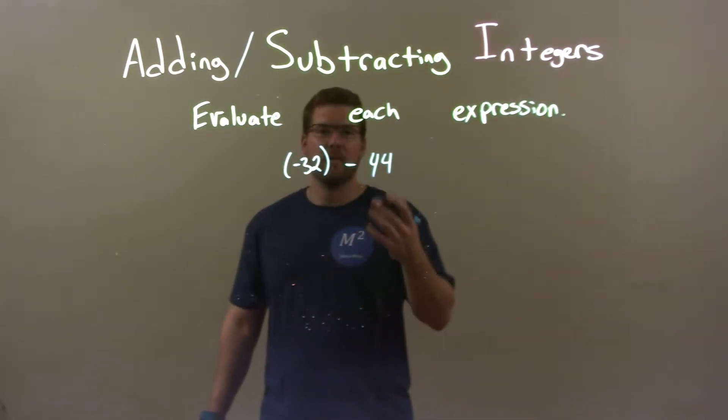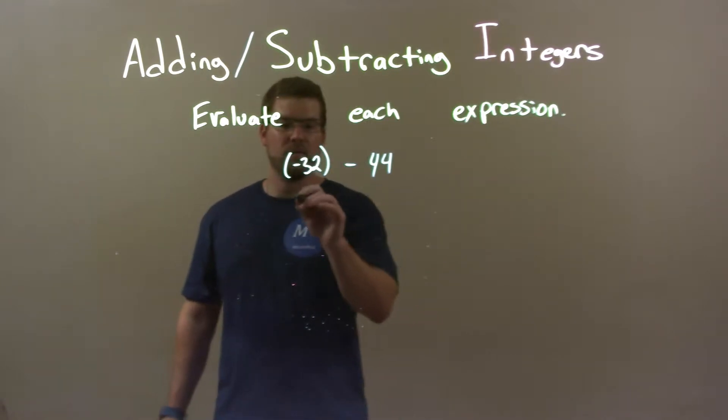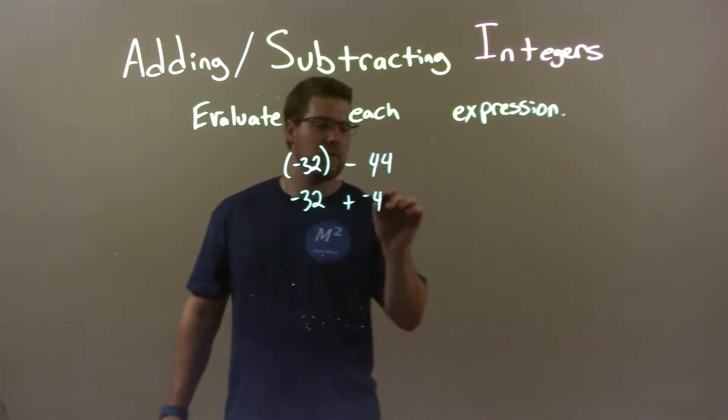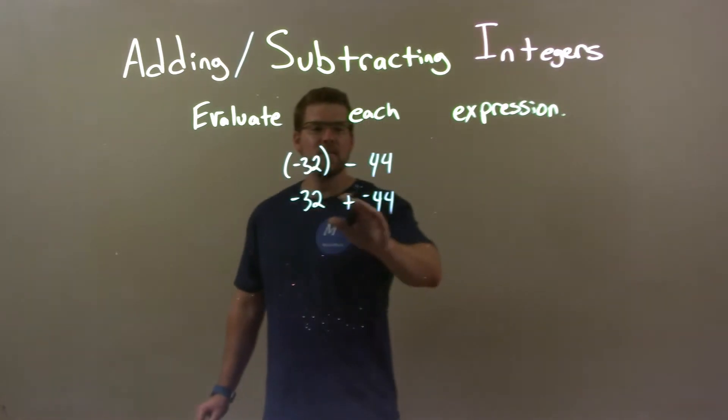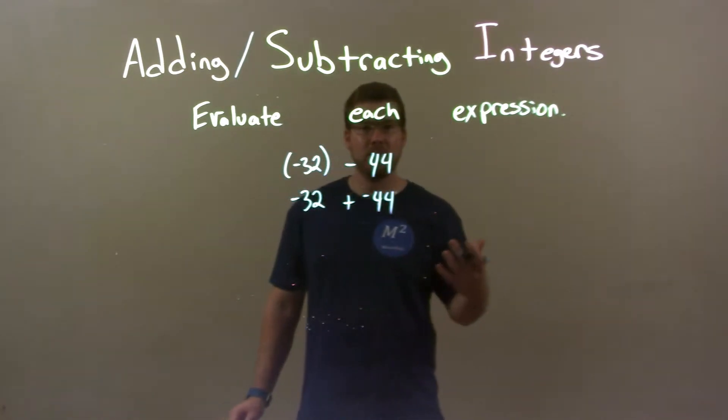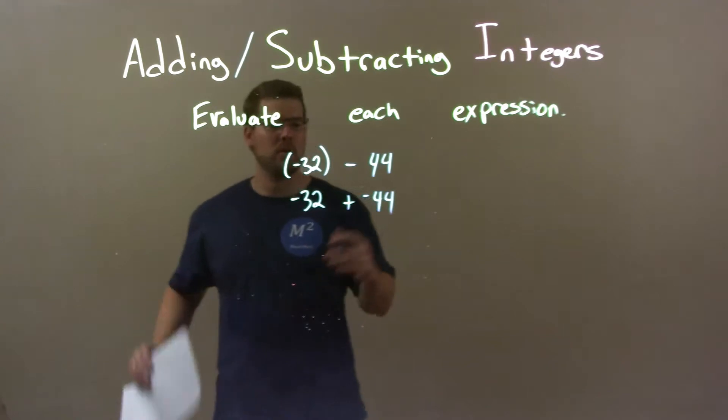I know subtracting a positive number is the same thing as adding a negative, so I have negative 32 plus negative 44. And since they're both negatives, we can add them together to get a larger negative number.